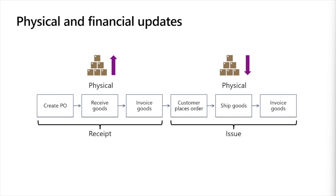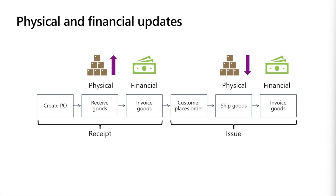Transactions that are physically updated but not financially updated are considered still open and can have corrections applied. For both purchase and sales orders, the invoice posting is the financial update. When we post the purchase invoice, we move the cost from the received-not-invoiced bucket into cost of goods purchased. For the sales order, we move the issue cost from ship-not-invoiced into cost of goods sold. Once an invoice is posted, the source transaction is considered closed. However, the final cost may still be adjusted based on how we configure costing, but the source document line is considered finalized.